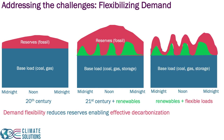One idea is that if you could actually operate loads more flexibly — meaning you could schedule the loads — you could potentially schedule them when renewables are available, significantly reducing the needs for reserves. Adding demand flexibility reduces reserves, which enables effective decarbonization.